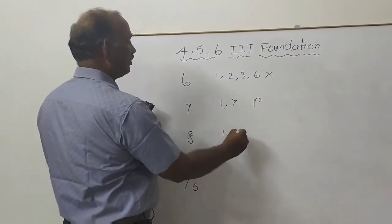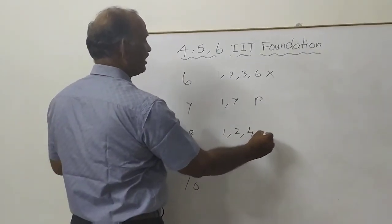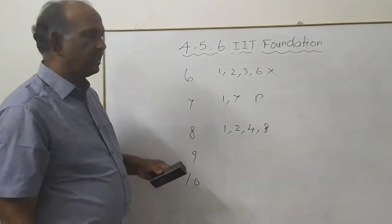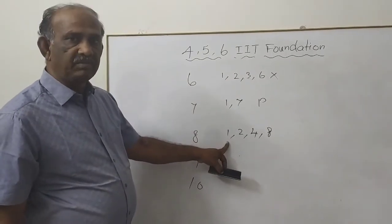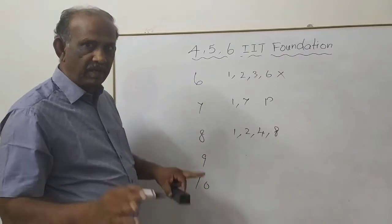8, 1 is a divisor, 8 is a divisor, it is not a prime number. Composite number. We need only prime number now.